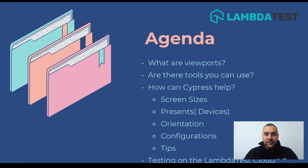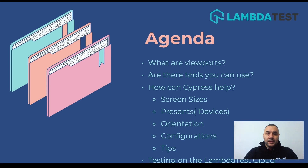The platform allows you to perform both real-time automation testing across more than 3000 environments and real mobile devices. By the end of this video you will know what viewports are, what tools we can use to check viewports, how Cypress fits in the picture, how to test different screen sizes and devices, how to configure orientation, and we'll end by scaling and running our tests in the LambdaTest cloud.